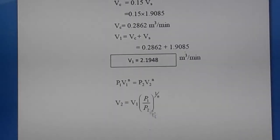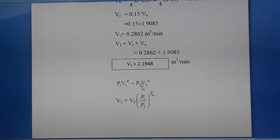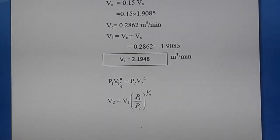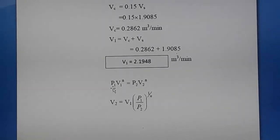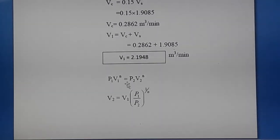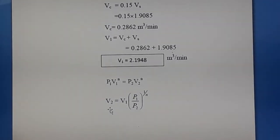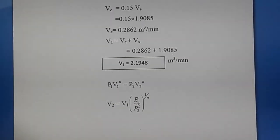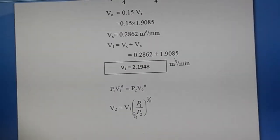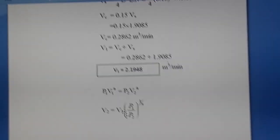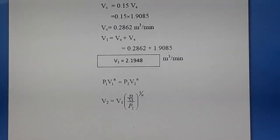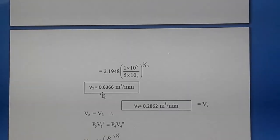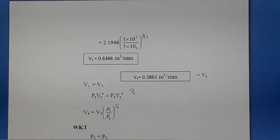For compression process 1→2: p1V1^n = p2V2^n, so V2 = V1 × (p1/p2)^(1/n). Substituting V1, p1, p2, and n = 1.3, we get V2 = 0.6366 m³/min.